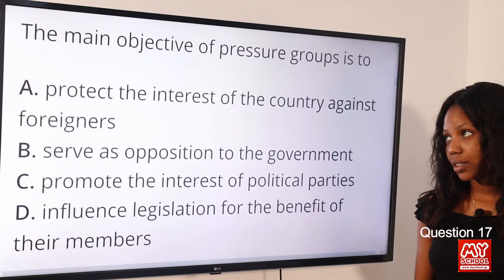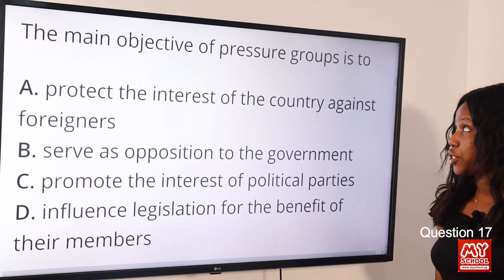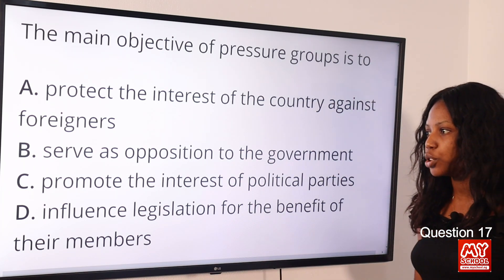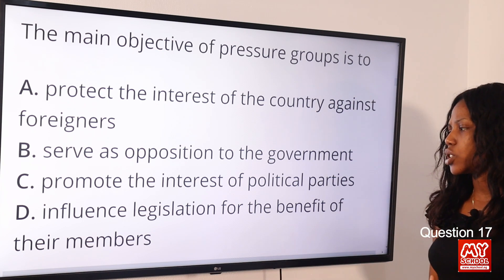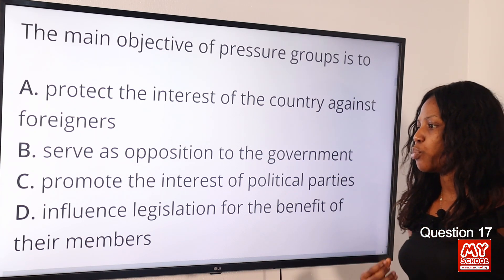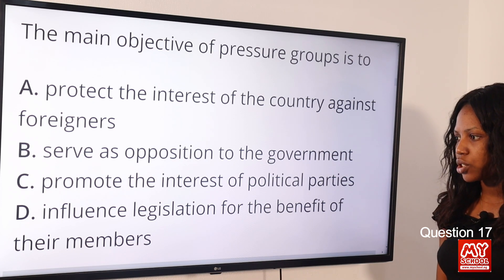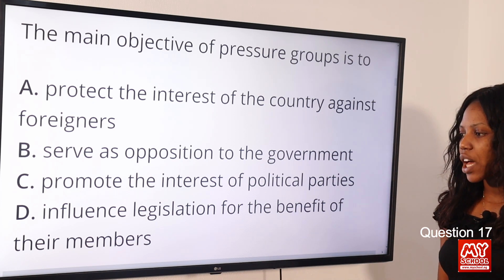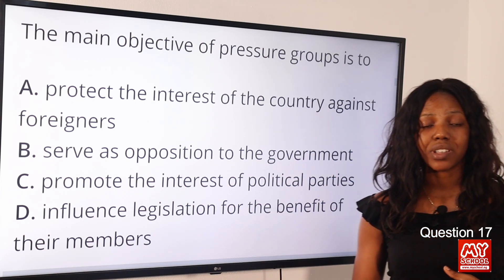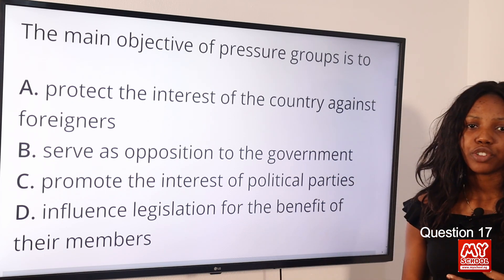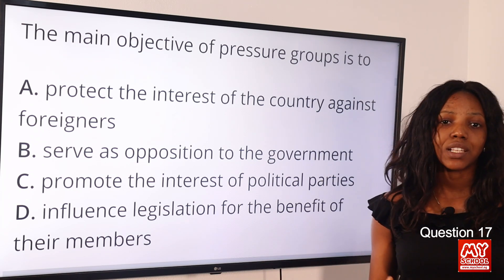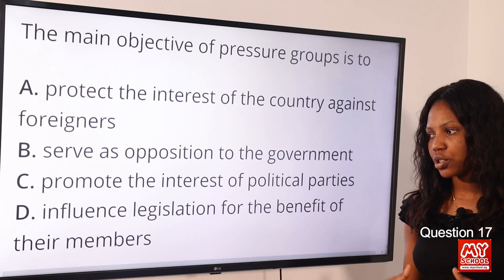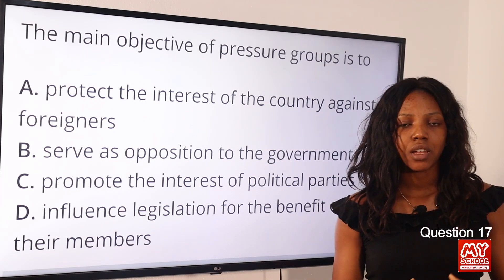Question 17: The main objective of pressure groups is to — option A: protect the interest of the country against foreigners; option B: serve as opposition to the government; option C: promote the interest of political parties; option D: influence legislation for the benefit of their members. The answer is option D. Pressure groups influence government decisions so that those decisions benefit the members of their group.